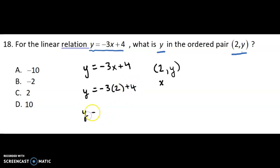So when I do that, I'm going to get y equals negative 3 times 2, which is negative 6 plus 4. So I'll have that y equals negative 2.